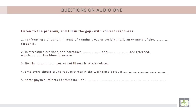One: confronting a situation instead of running away or avoiding it is an example of the fight response. Two: in stressful situations, the hormones cortisone and adrenaline are released, which raise the blood pressure.